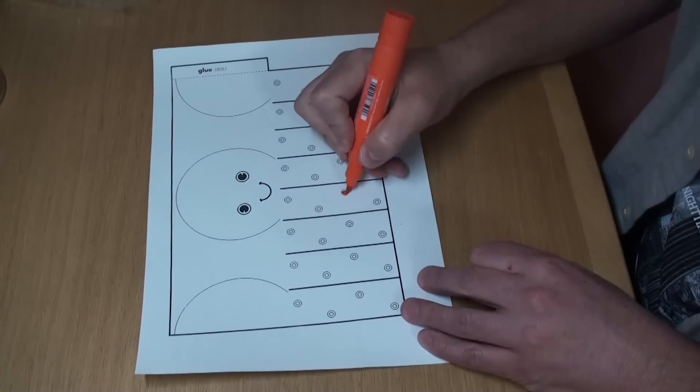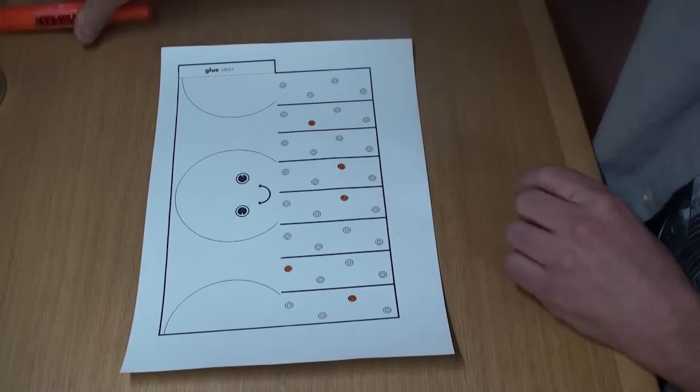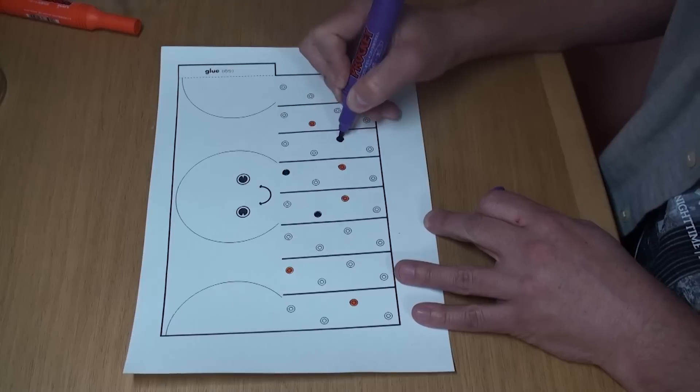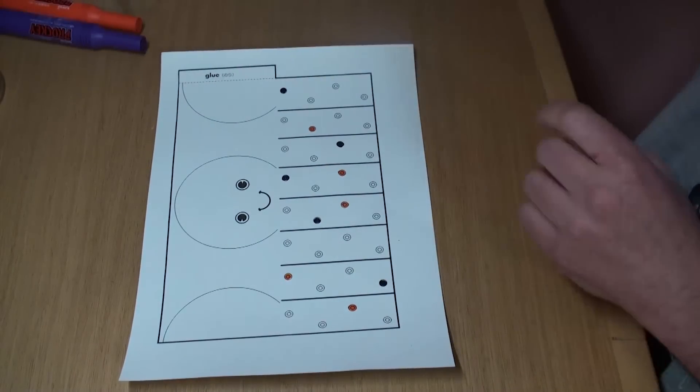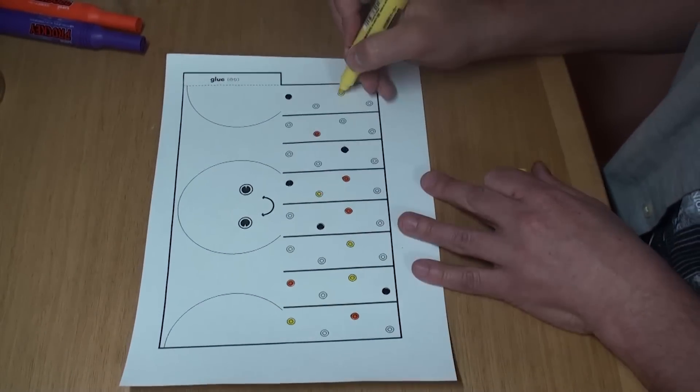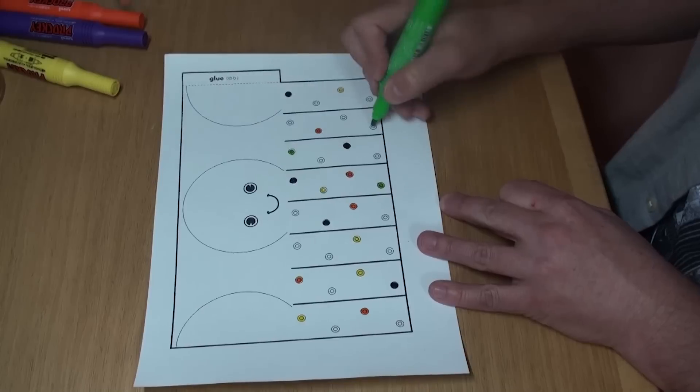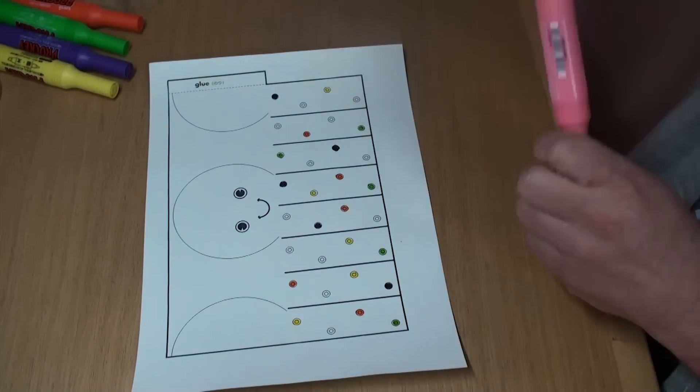First, let's color the tentacles. Here's some orange, some purple, some yellow, some green, some pink.